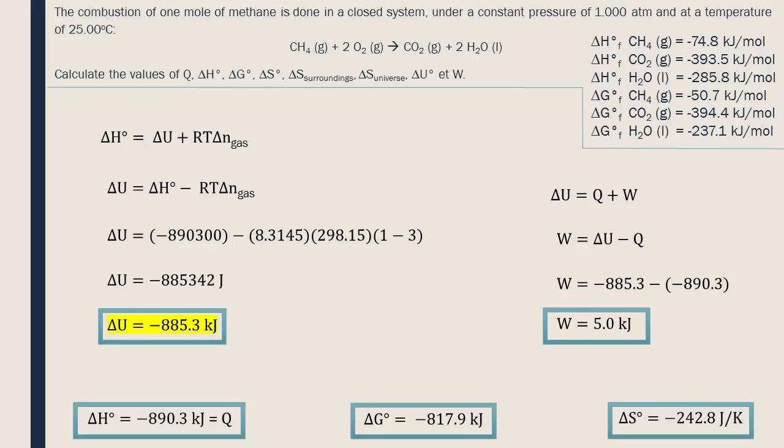This gave an internal energy change in the system of negative 885.3 kilojoules, our delta U value. Also, the environment had to absorb around 70 kilojoules of energy in the form of heat, almost like a tax so that the entropy of the universe stayed positive and so the second law of thermodynamics was respected.